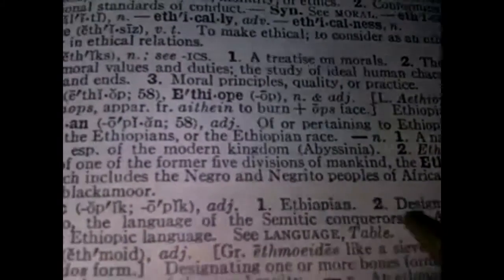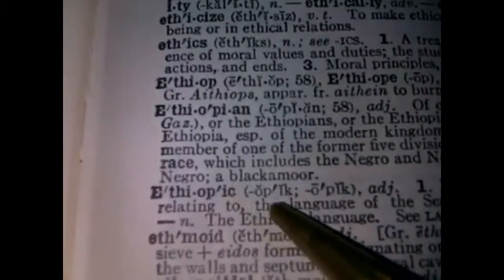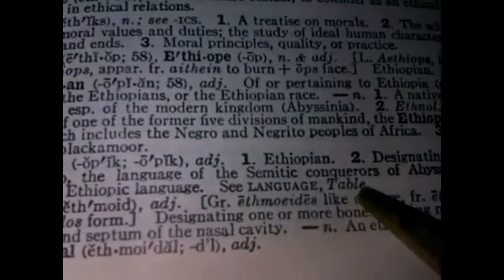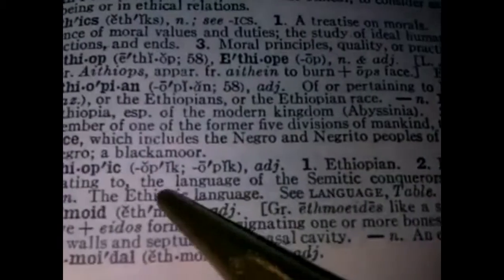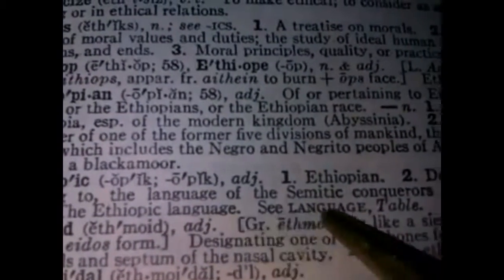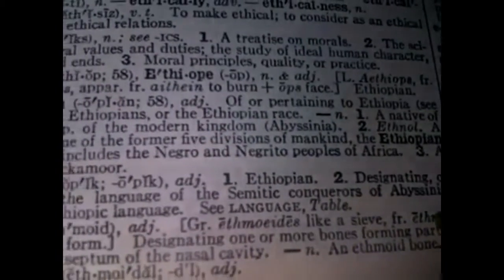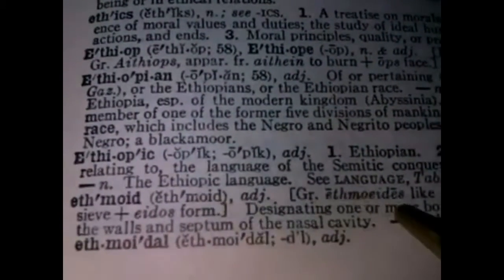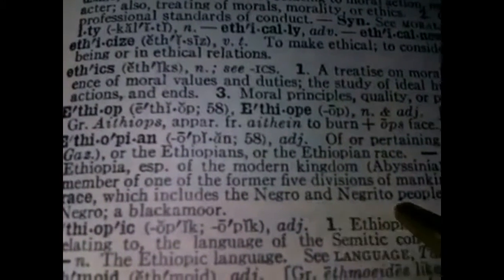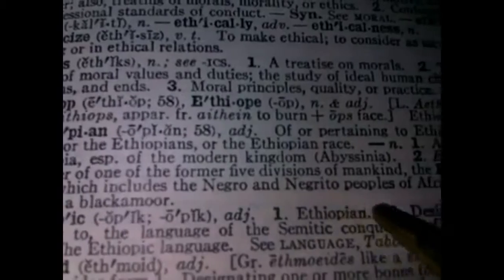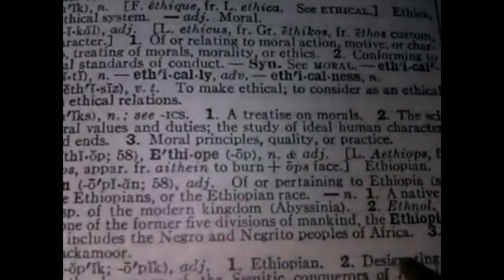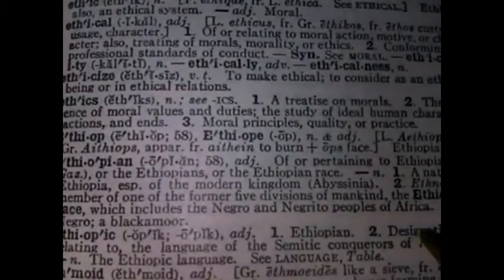But it's too telling. Too much information. A Negro — you see that right there? A Negro, a blackamoor. It says 'Ethiopic' — Ethiopian, designating or related to the language of the Semitic conquerors of Abyssinia. The Ethiopic language. But this is including the race, including the Negro and the Negrito peoples of Africa. This is the reason why you had Marcus Garvey with the Universal Negro Improvement Association and Dr. Malakou Bayan with the Ethiopian World Federation.